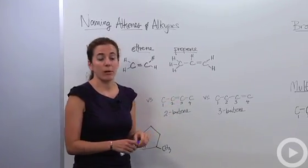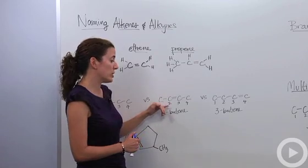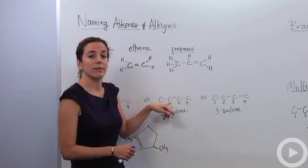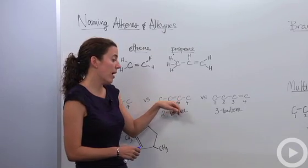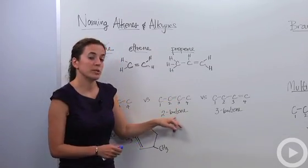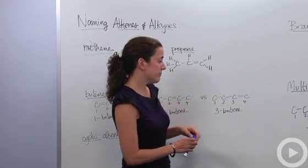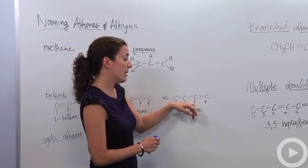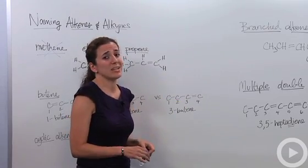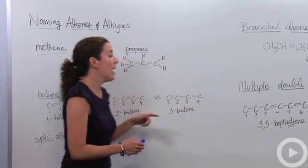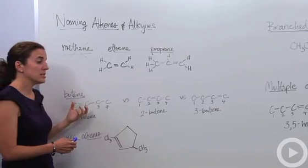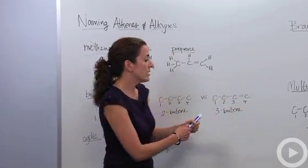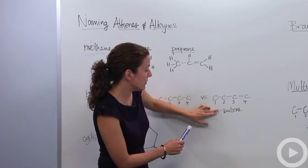Let's say the double bond is between the middle two carbons. We number it one, two, three, four, and we would call this 2-butene, because that tells us the double bond is between the second and third carbon. If the double bond is between the last two carbons, we might say 3-butene, but that's actually the same as 1-butene — it's just flipped.